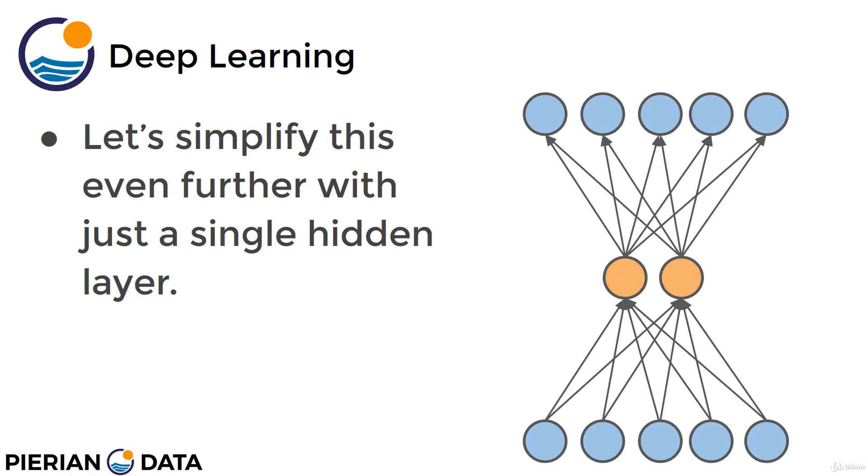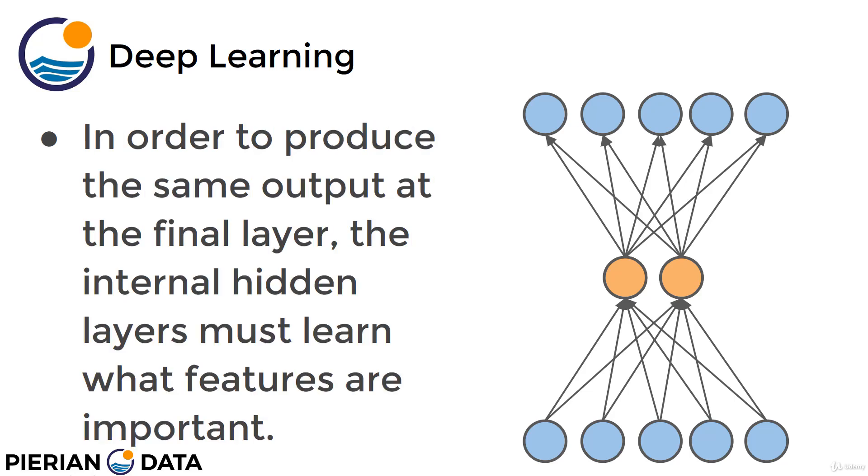I'm going to walk through these layers and explain this basic idea. To simplify this even further, let's imagine that we just have a single hidden layer. So you go directly five to two to five. The idea here is that in order to produce the same output at the final layer, that internal hidden layer must actually learn what features are important. This kind of extreme example basically shows you that in order for this input to be reproduced as output, those two neurons in the hidden layer are going to have to learn which inputs are actually important in order to reproduce the output.